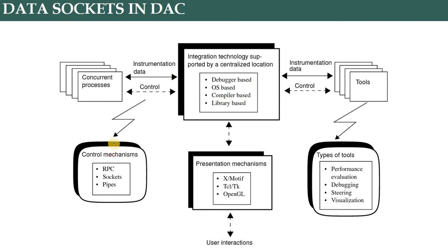This is a basic diagram of a simple instrumentation system where we have various types of concurrent processes. Like at a basic level, we have temperature, pressure, flow — all the variety of measurement processes will be there in a simple instrumentation system. That instrumentation data will go on to technology-based processor units.